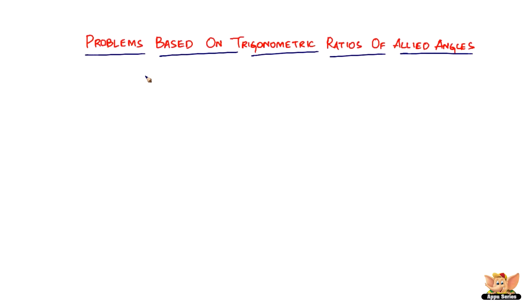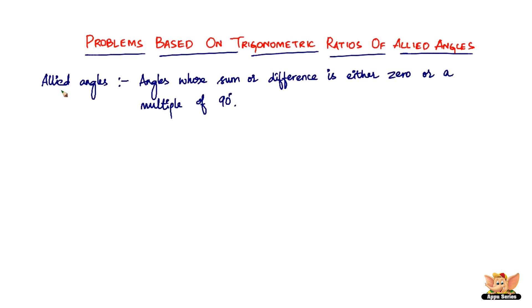In this video, we are going to solve problems based on trigonometric ratios of allied angles. Allied angles are angles whose sum or difference is either 0 or a multiple of 90 degrees. Let's solve problems based on trigonometric ratios of allied angles.